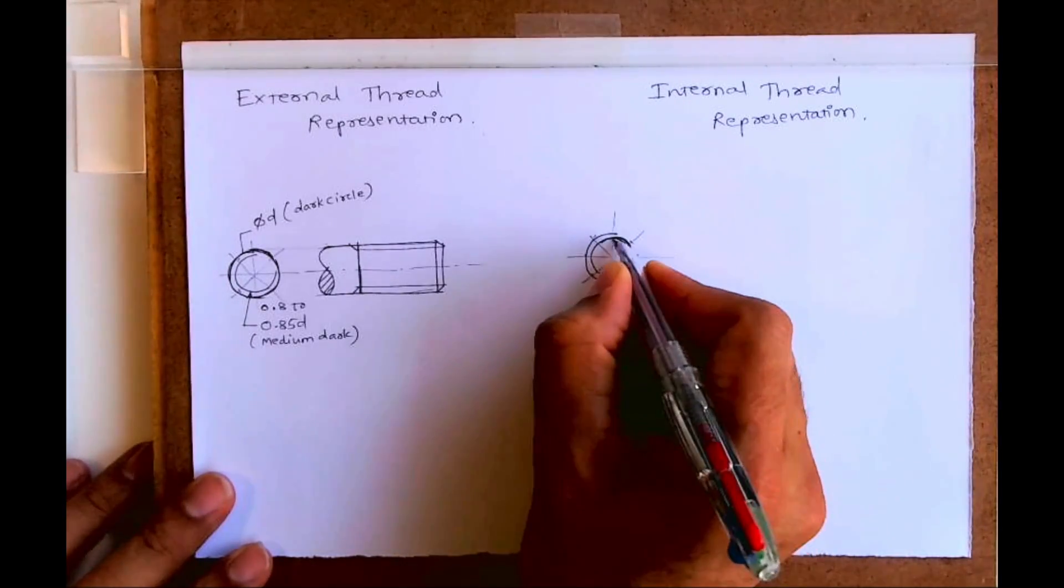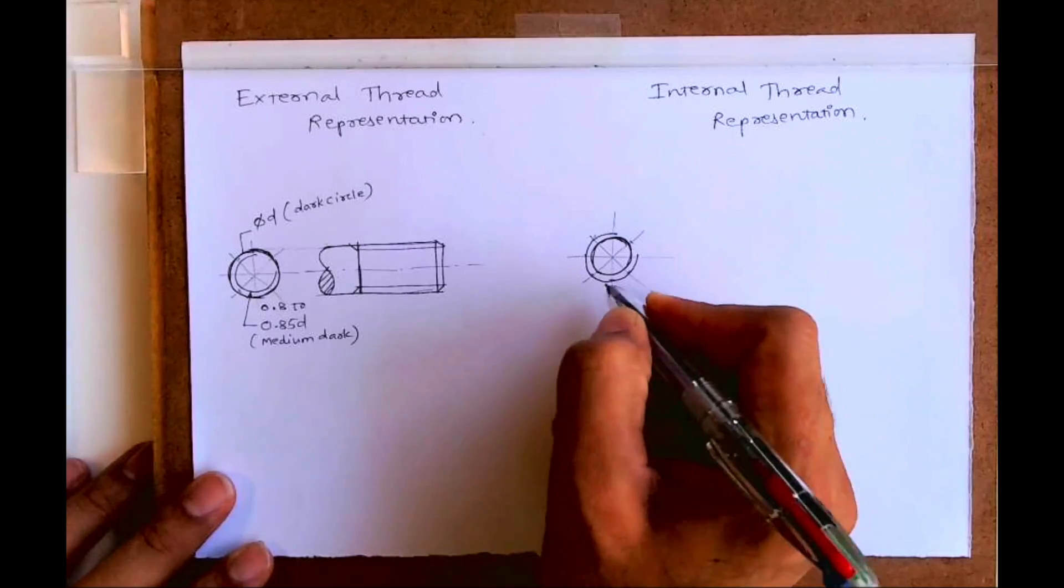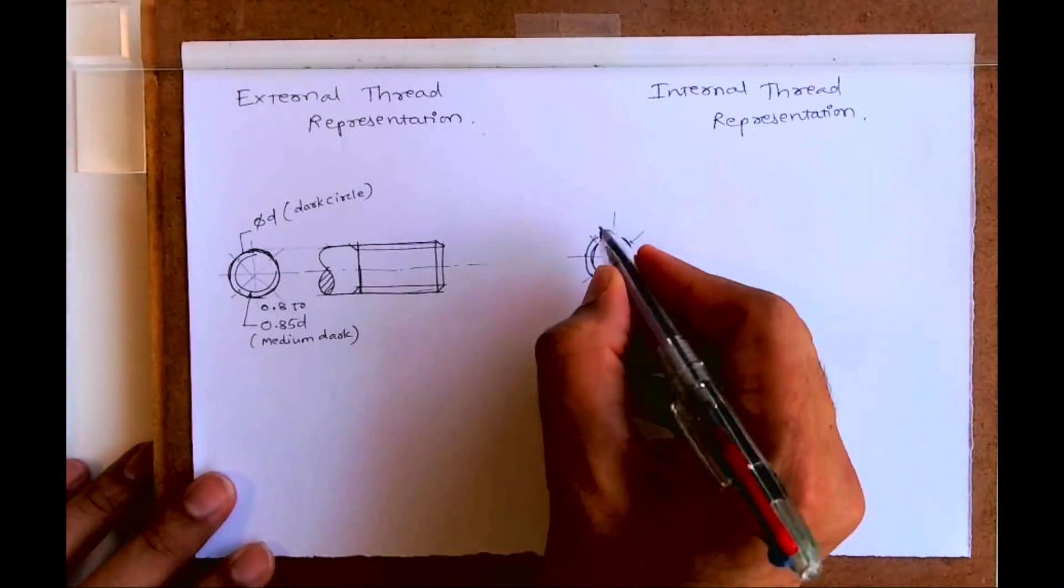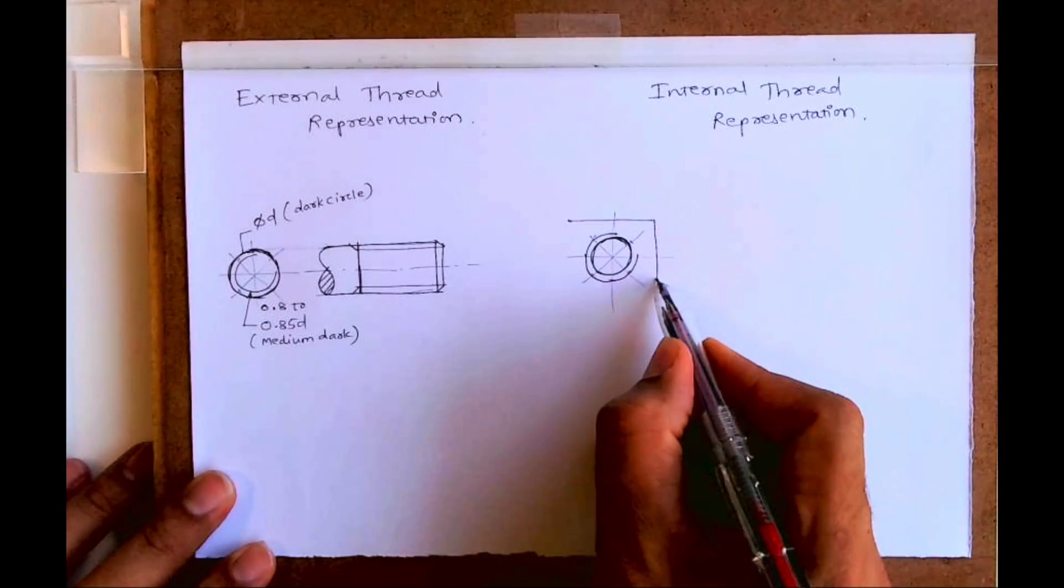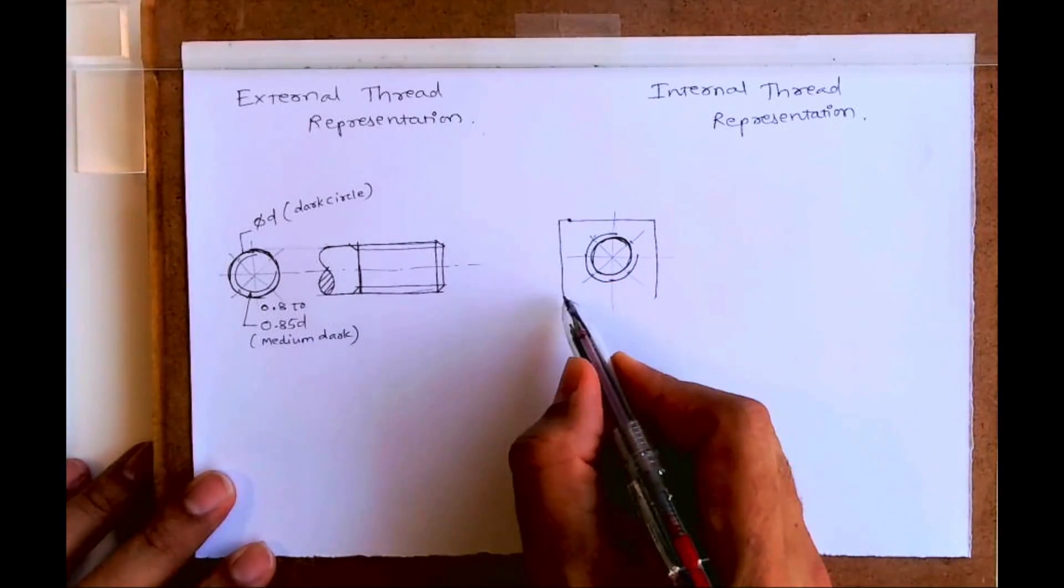In internal thread, the inner circle will be dark, and in external thread, the outer circle will be dark. That is the difference which we need to keep in mind.